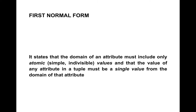By default, all database schemas or relations would be in first normal form. First normal form states that the domain of an attribute must include only atomic — that is, simple and indivisible — values. The value of any attribute in a tuple must be a single value from the domain of that attribute. For example, SSN is an attribute and its domain refers to the SSN values.